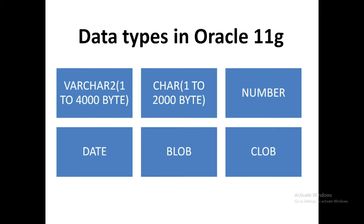The next data type is CHAR. In the CHAR data type, you can store fixed length strings or fixed length characters. By default it will take one character, and the size of the character will be starting from 1 to 2000 bytes.